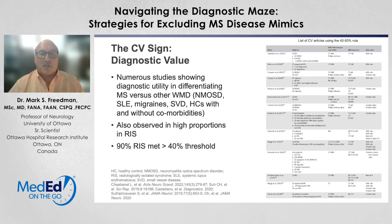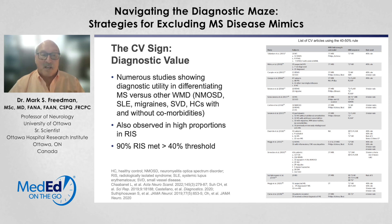The diagnostic value of the central vein sign has been evaluated against a number of conditions that could look like MS. You don't see it in lupus, migraines, or even NMO. It is even seen in RIS — that pre-MS kind of MRI sign. So if you use the central vein sign, you probably won't make mistakes.